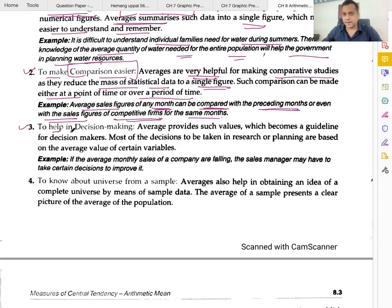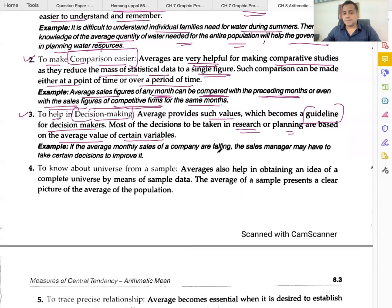Function three: to help in decision making. Average provides such values which become a guideline for decision makers. Most of the decisions to be taken in research or planning are based on the average value of certain variables. If the average monthly sales of a company are falling, the sales manager may have to take certain decisions.